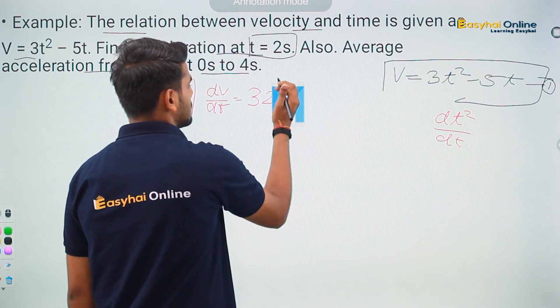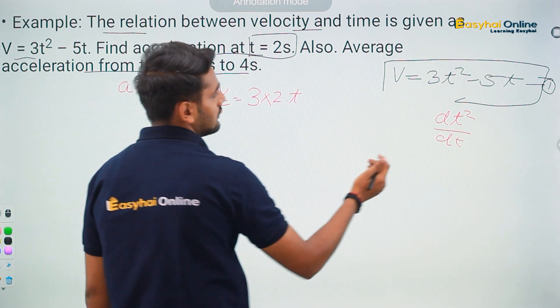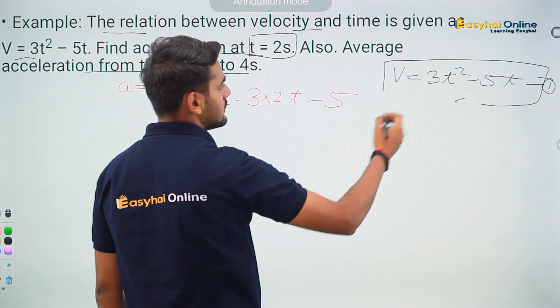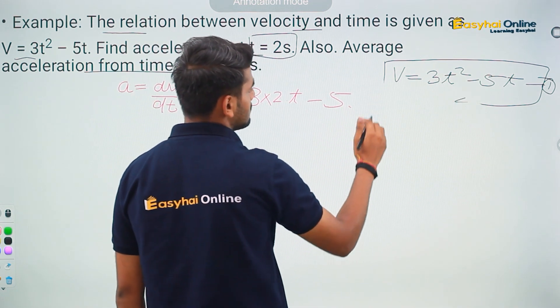This is going to be equal to 2, actually 3 multiplied by 2 into t, minus 5. And we will do the same thing with the other one which is 5t. dt by dt is going to be 1.